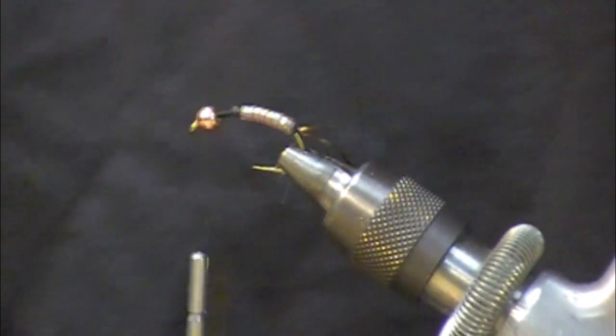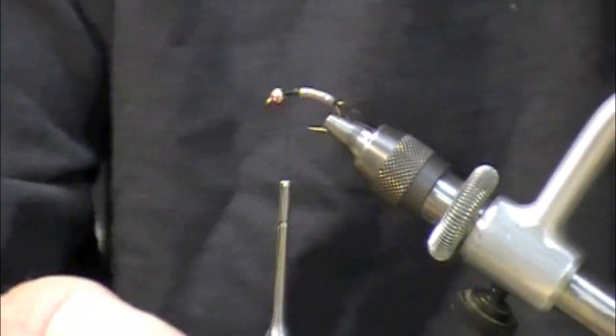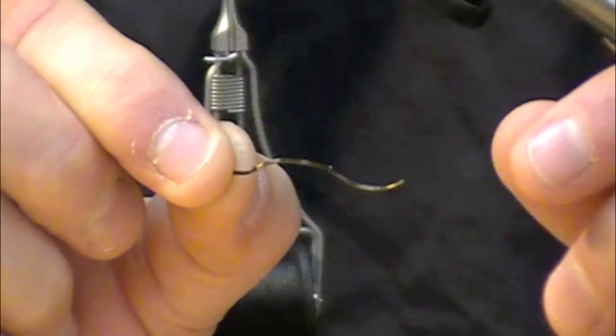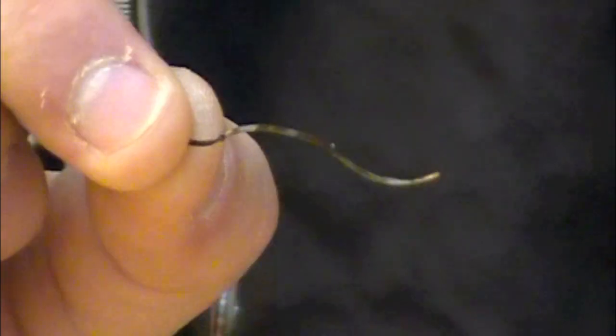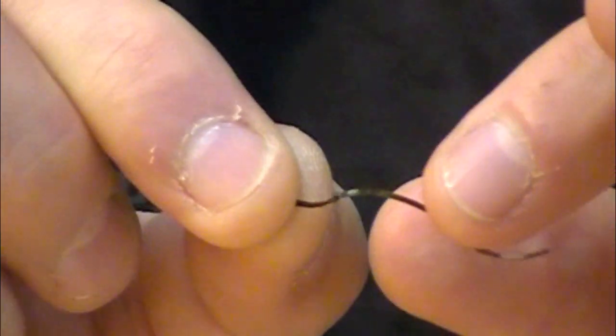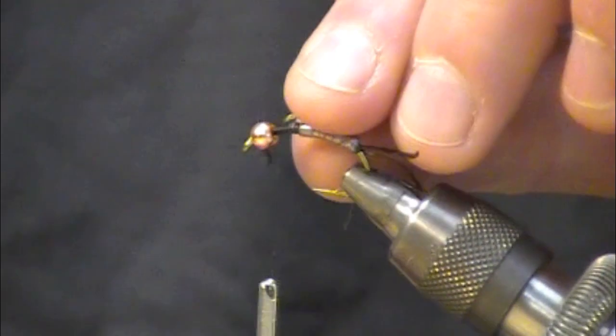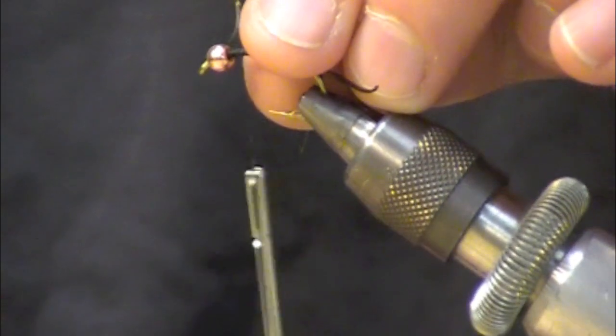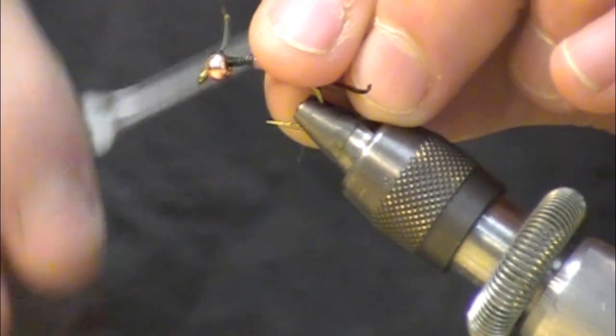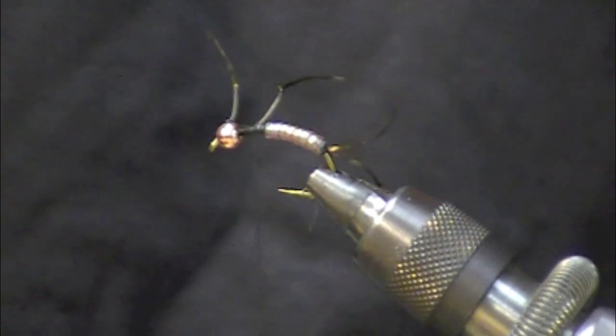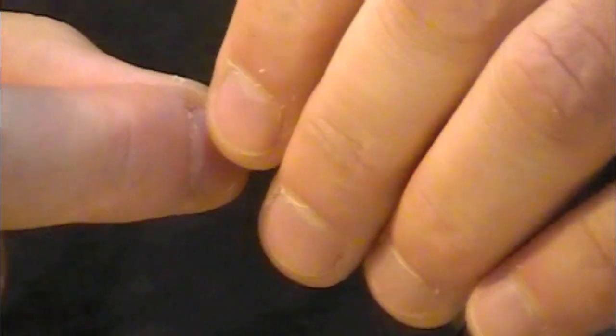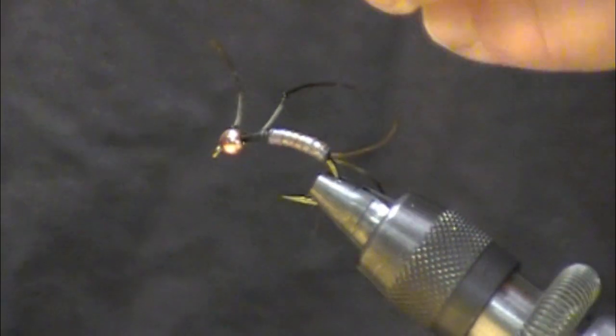So the next thing I'm going to do is I've got some pre-tied LifeFlex material and all I've done is done two single overhand knots. This is going to create the appendages and give it a little bit more of an articulated look. I'm going to tie those in about halfway between where the abdomen stopped and the bead starts, one on each side. They're a little bit long right now but we can always trim that down.